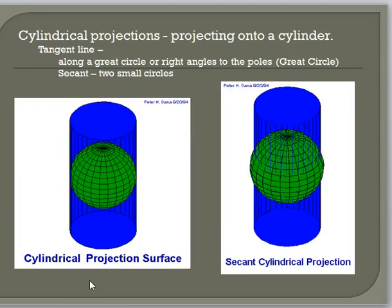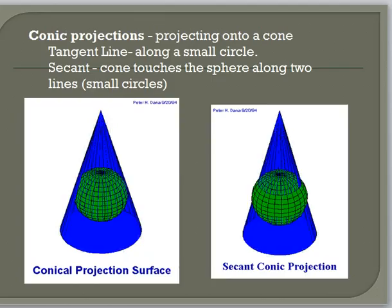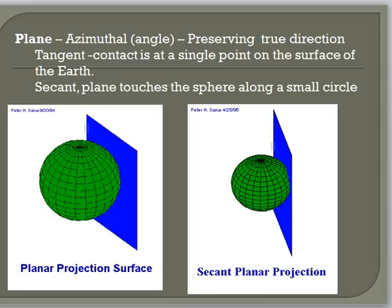For a cylindrical projection that is tangent, the cylinder wraps around the equator. For a secant cylindrical, you imagine the cylinder going through the globe with two lines of latitude — not the equator, maybe 30 north and 30 south — as the secant points. In a conic tangent projection, the cone touches at only one line of latitude. A secant conic has two lines of latitude where the cone touches. The same idea applies to the planar projection.